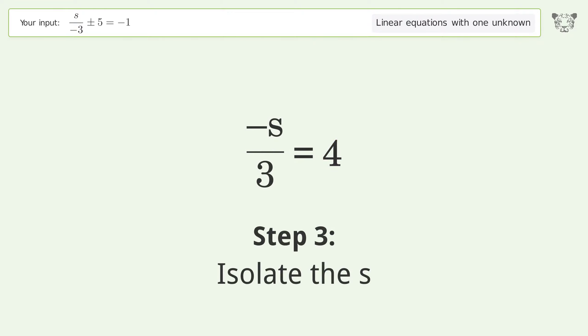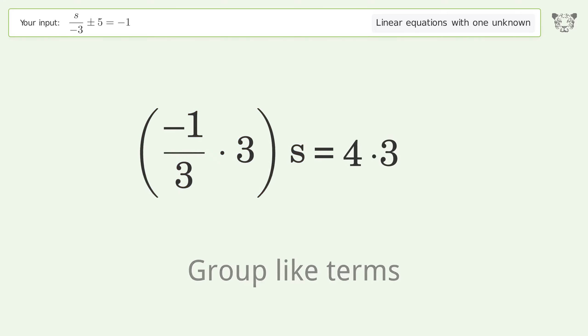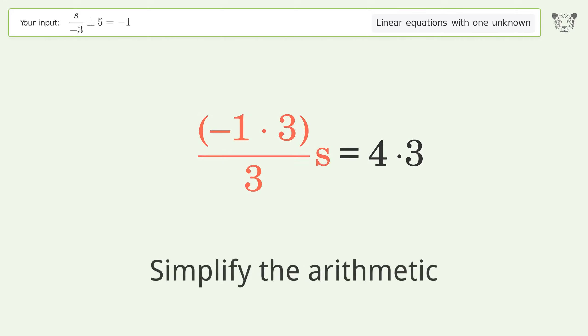Isolate the s. Multiply both sides by 3. Group like terms. Multiply the coefficients. Simplify the arithmetic.